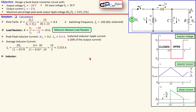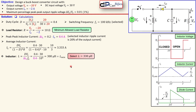Now we can calculate the required inductor value using this formula. We know the duty cycle, VS, the ripple, and the switching frequency — this gives us 300 microhenries. This is the minimum value needed for the specification. In practice we take a little bit larger, so I take 10 percent more, giving 330 microhenries.